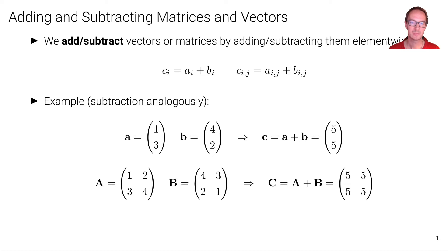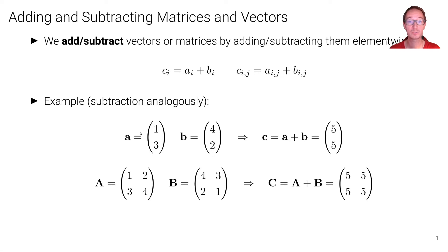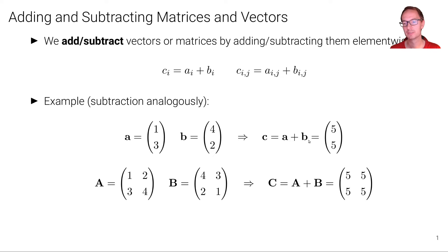This works analogously for subtraction, but here is an example with numbers for the addition operator. Suppose we have the vector 1, 3, which we call A, and the vector 4, 2 which we call B. Both are column vectors, but it would also work if both are row vectors — the output would just be a row vector. If we add these two column vectors A and B we get 5, 5, because 1 plus 4 is 5 and 3 plus 2 is 5.